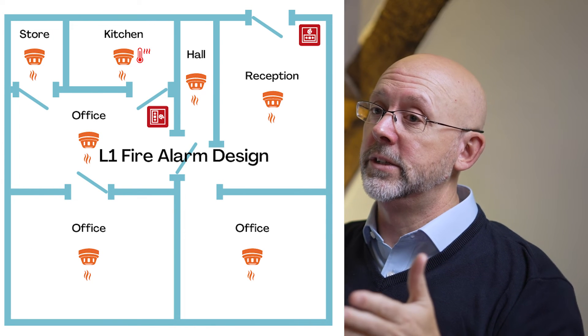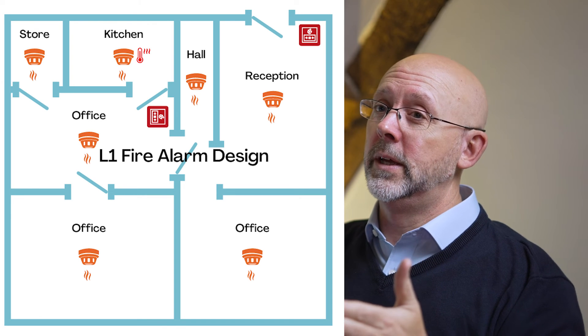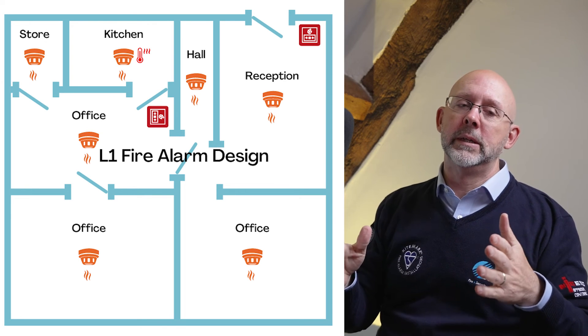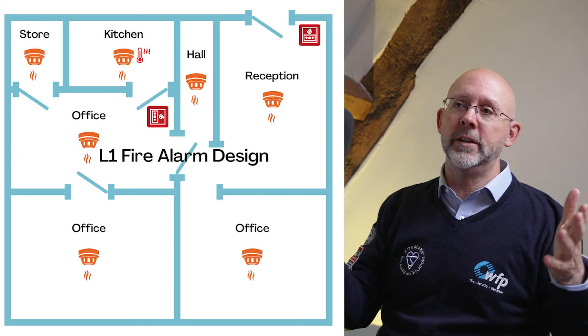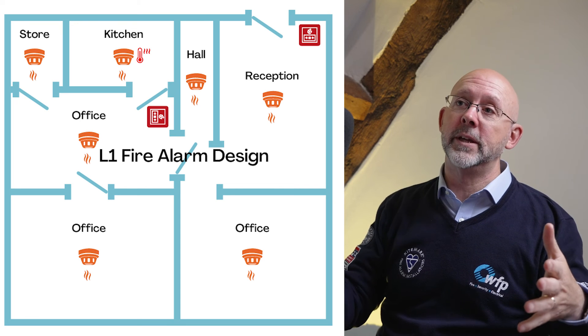L1 is every room larger than one metre squared having a smoke detector, including large cupboards. It's quite intensive and doesn't happen that often, but a fire risk assessor would specify it for high-risk buildings with many occupants where the earliest possible warning is needed, since smoke is the primary life safety concern. In the UK, around 98% of systems fall into L1 through L5, with L3 being the most commonly used. However, you won't know which category applies until the fire risk assessment has been completed.